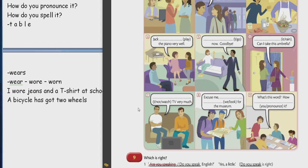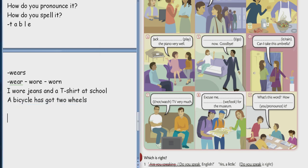What's this word? How... How do you pronounce it? How do you pronounce it? How do you pronounce it? We pronounce it a table. Repeat. We pronounce it a table. We pronounce... It's... It's... A table. A table. Yes.